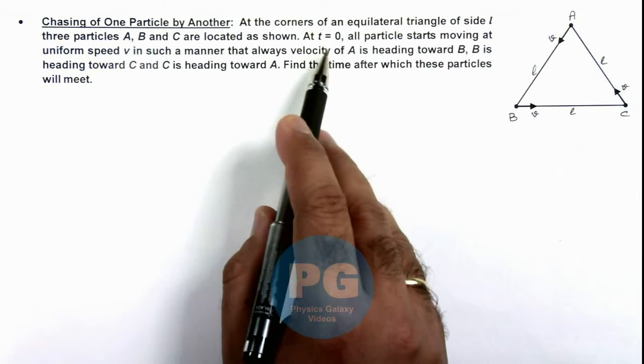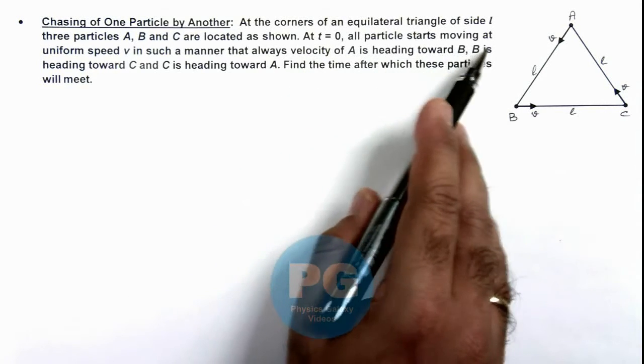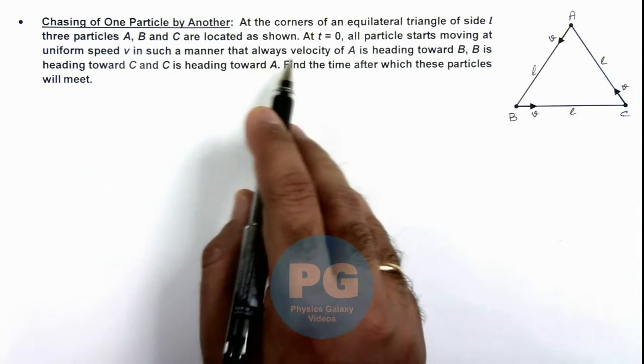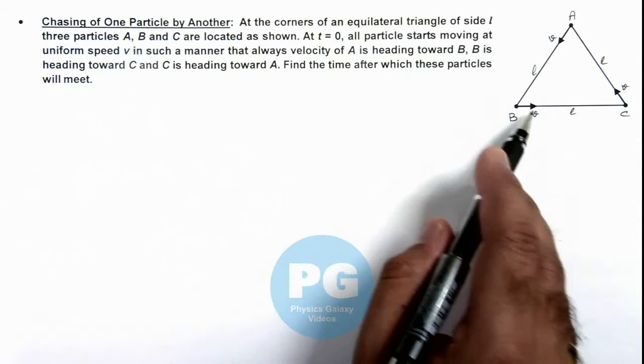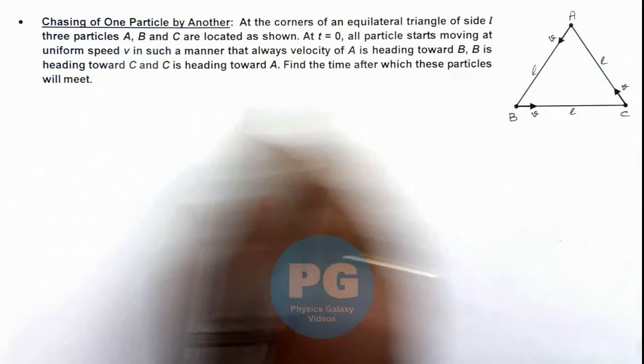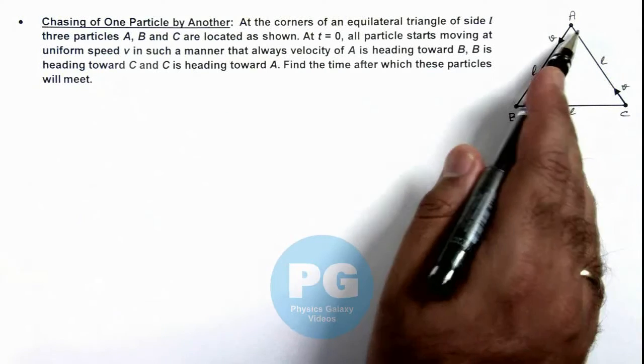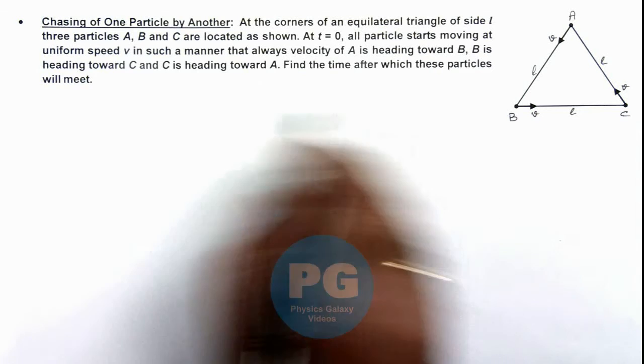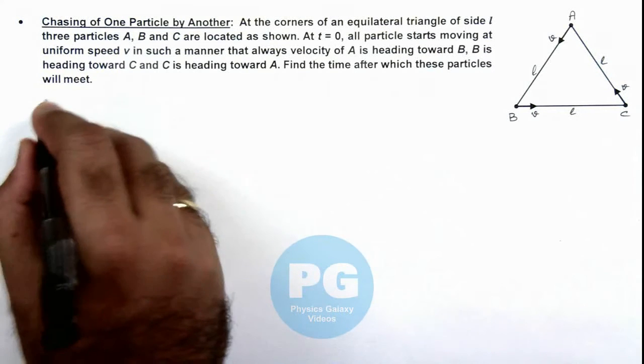At t equal to zero, all particles start moving at uniform speed v in such a manner that always velocity of A is heading toward B, B is heading toward C, and C is heading toward A. We are required to find the time after which these particles will meet in this situation.